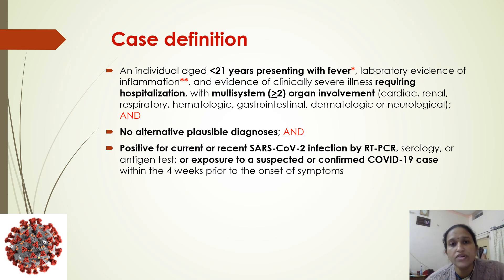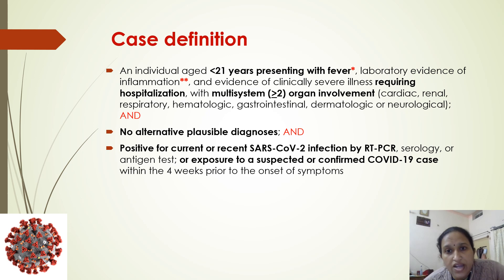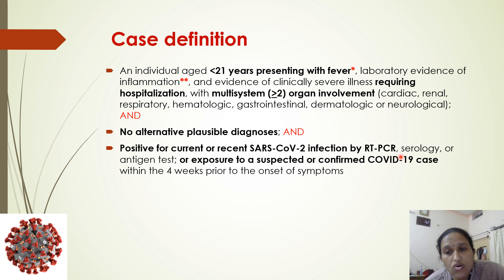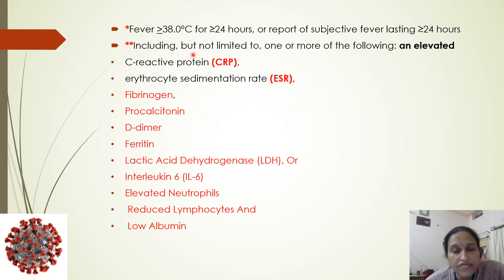The case definition requires any individual less than 21 years of age presenting with fever, laboratory evidence of inflammation, and clinically severe illness requiring hospitalization, with multi-system involvement of two or more systems — cardiac, renal, respiratory, hematologic, gastrointestinal, dermatologic, or neurologic — with no alternative plausible diagnosis, and positive for current or recent SARS-CoV-2 infection by RT-PCR, antibody, or antigen testing, or exposure to a suspected or confirmed COVID-19 case within the last four weeks.